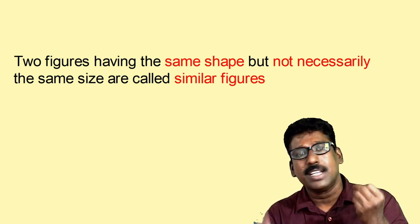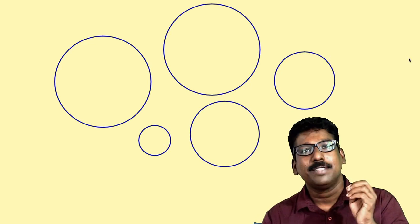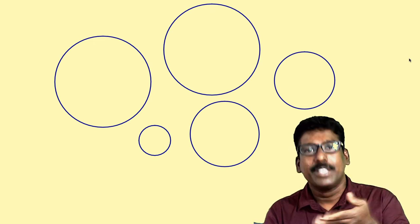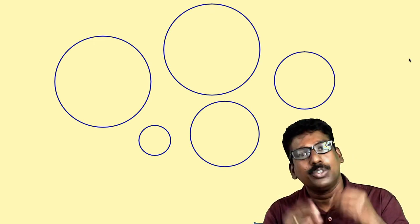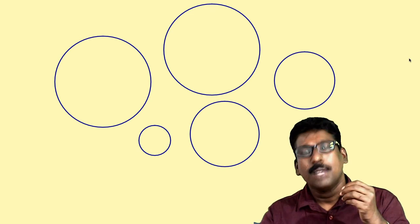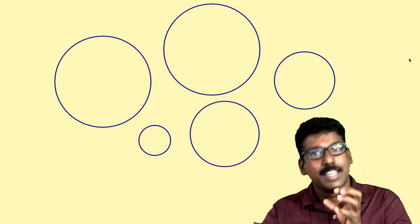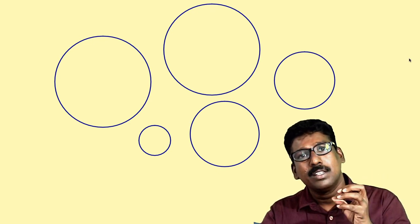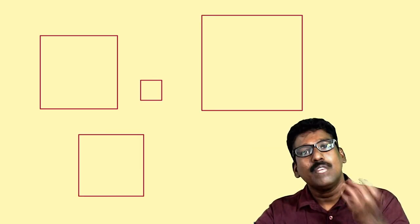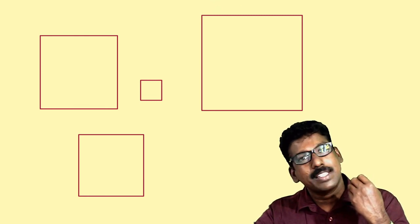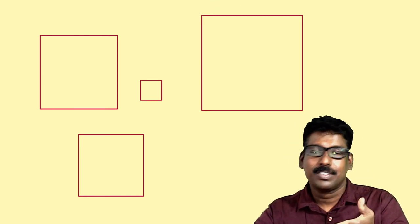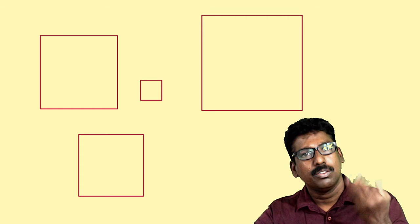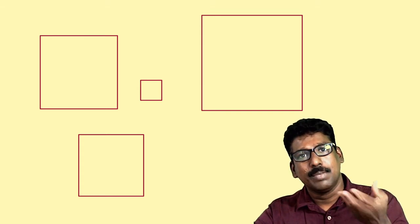Now look at some geometrical figures. Here you can see circles. Are they congruent? No, they have different sizes, so you cannot say they are congruent. But they all look the same, so these circles are all similar figures. Then what about the squares? Are they similar? Of course — they have the same shape but different sizes, so we can call them similar figures.